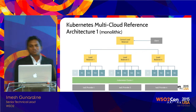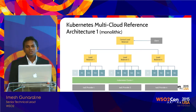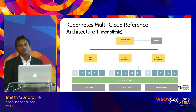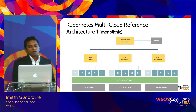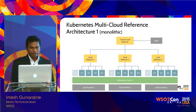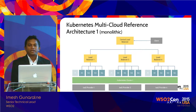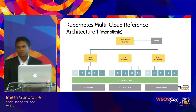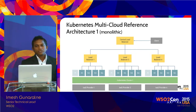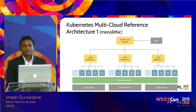The first reference architecture being discussed is the monolithic option: what if we have to run on multiple IaaS providers and deploy a Kubernetes cluster — can we go with one single Kubernetes cluster spanning across multiple IaaS providers? What would be the approach, and what are the advantages and disadvantages?